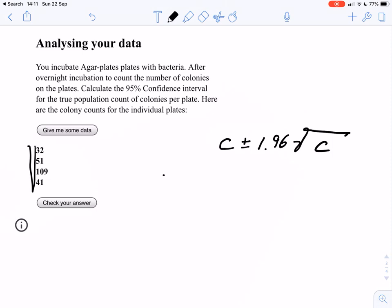So in this case we have 32 plus 51 plus 109 plus 41. And this gives us a total of 233 colonies that we observe on these four plates.